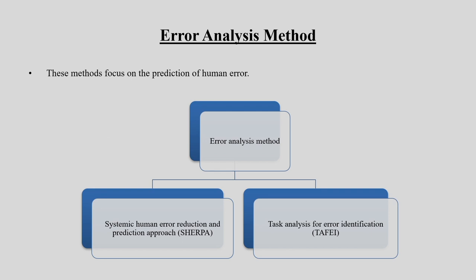The next part of this whole chapter is the error analysis method. In error analysis we will deal mainly with two components. These methods focus on the prediction of human error. Whereas earlier methods tried to gather information from the system, in the error method we again gather information from the system but it is very much connected to human performance. The first one is SHERPA — Systemic Human Error Reduction and Prediction Approach.